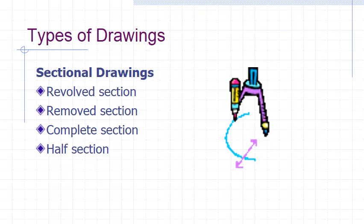A sectional drawing is obtained by cutting away part of an object to show the shape and construction at the cutting plane.